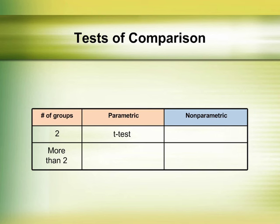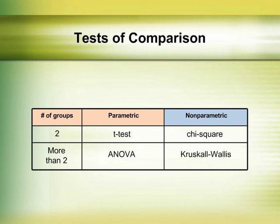The t-test assesses whether the means of two groups are statistically different from each other. This analysis is appropriate whenever you want to compare the means of two groups, and especially appropriate as the method of analysis for a quasi-experimental design. When choosing a t-test, the assumptions are that the data are parametric. The analysis of variance, or ANOVA, assesses whether the means of more than two groups are statistically different from each other. When choosing an ANOVA, the assumptions are that the data are parametric. The chi-square test can be used when you have nonparametric data and want to compare differences between groups. The Kruskal-Wallis test can be used when there are more than two groups and the data are nonparametric.